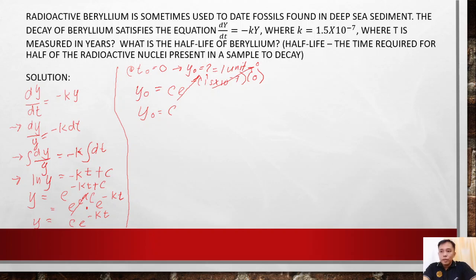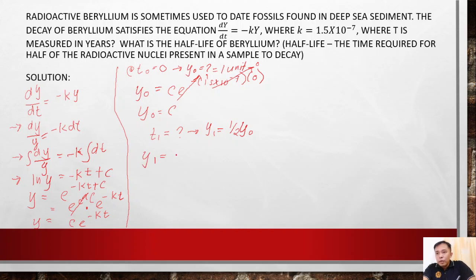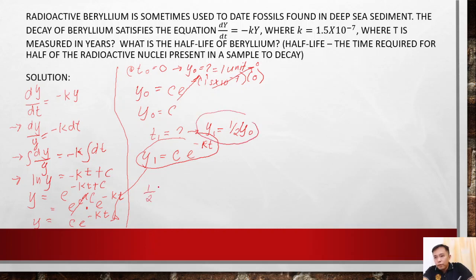So remember that y sub 0 equals c — we will use that in our equation. For the half-life, the time t sub 1 is required for half of the radioactive nuclei present in the sample to decay. We can say that y sub 1 is equal to one half of y sub 0. Therefore, substituting into the general equation, we have one half y sub 0 equals c times e to the negative kt. And since c equals y sub 0, we substitute that in.